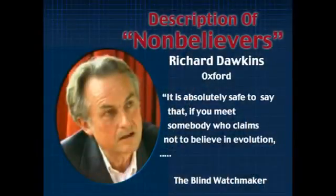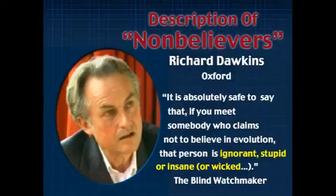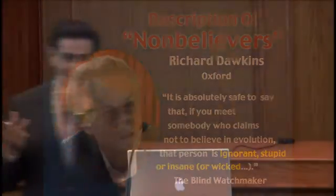I think that explains Richard Dawkins' statement: 'It is absolutely safe to say that if you meet someone who claims not to believe in evolution, that person is ignorant, stupid, or insane, or wicked.' He is seeing some small variations, and you can see that. Therefore, he says, you have to believe all came from an inorganic source. But that does not follow. You see how the switch in definitions confuses the argument.